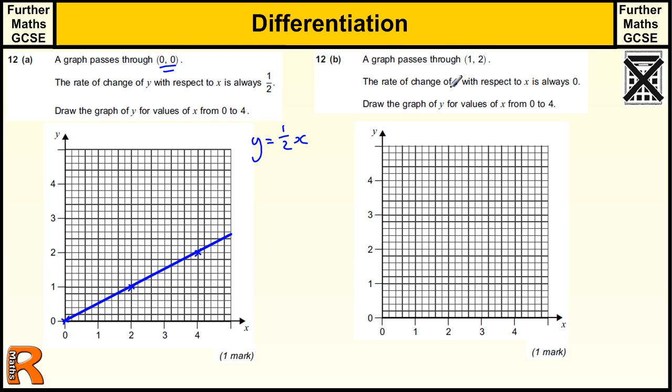Okay, part b. A graph passes through (1,2), so it goes through (1,2). The rate of change with respect to x is always zero, so that means as you go across one, you're going up zero. So that tells us that it's not going up. So it's just going to keep going across like that, so it's a horizontal line. It's in fact the line y equals 2.